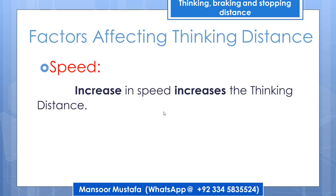The first factor that affects thinking distance is the speed of the vehicle. Remember that thinking distance depends on thinking time. If thinking time stays the same but your speed varies — if you are moving slowly, you cover less distance in 0.5 seconds, but if you are moving faster, you cover more distance in the same 0.5 seconds. So the greater the speed, the greater the thinking distance.